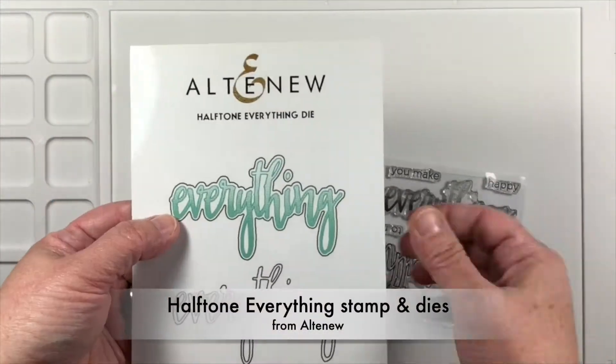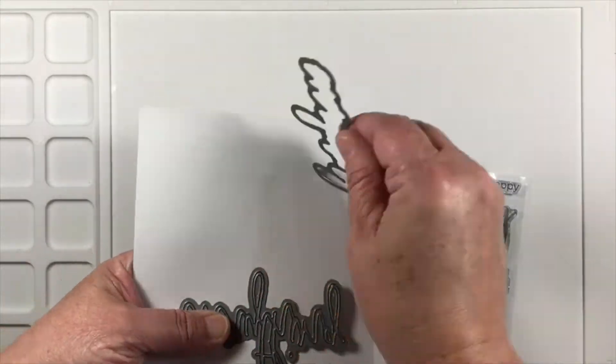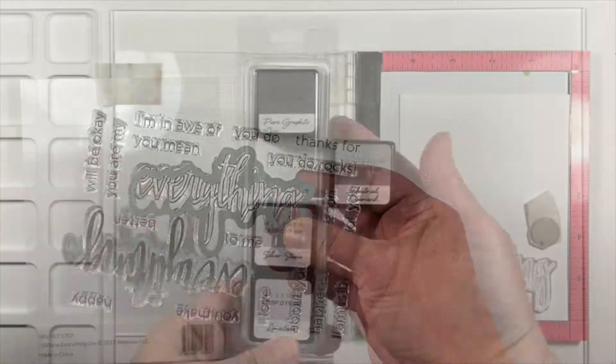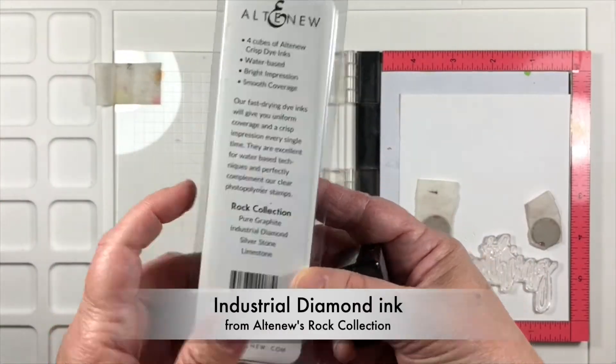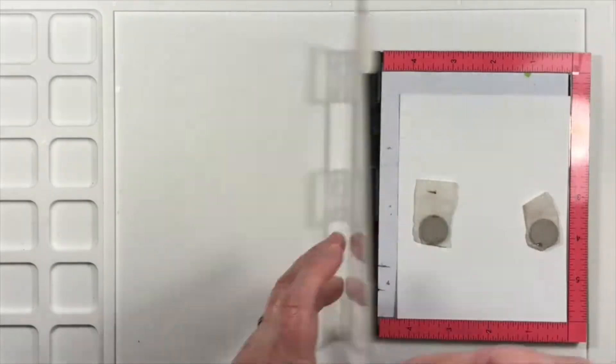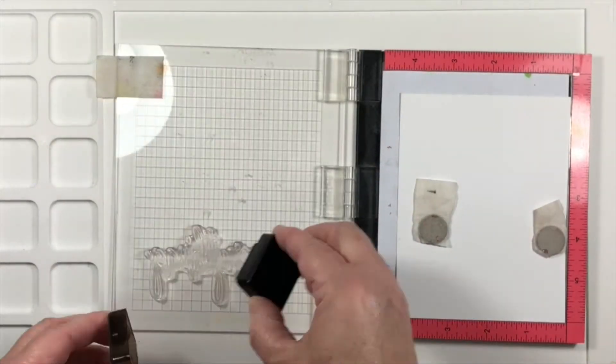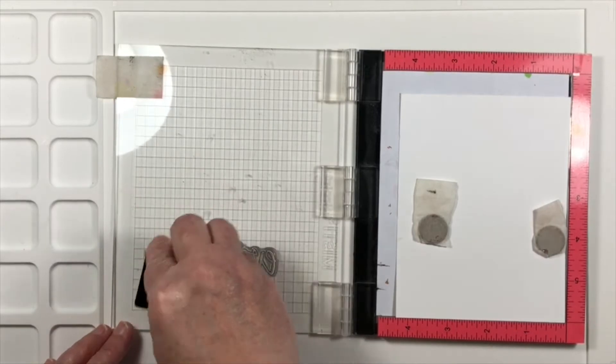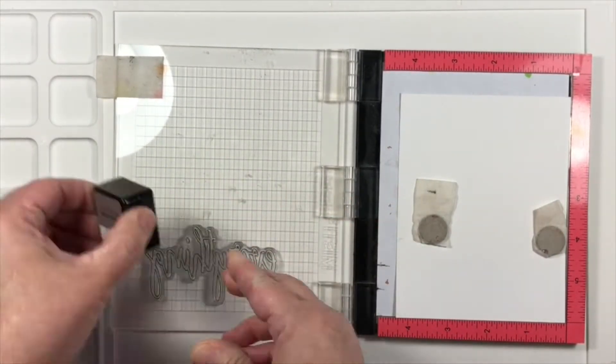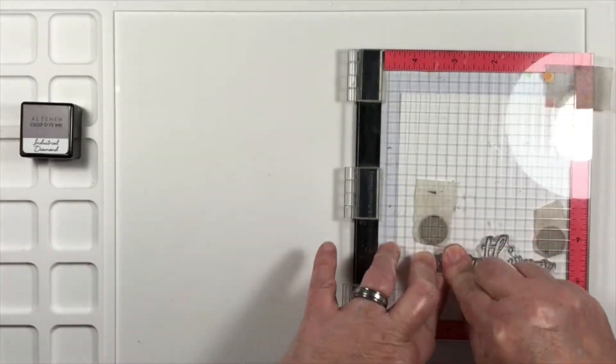I'm stamping today with Altenew's Half Tone Everything stamps and dies. When I think of a layered stamp set I don't always think about word stamps. However this is definitely a layering stamp set. So the way I'm going to approach it is to first stamp the outline image of the word everything and I'm using Altenew inks here today. This is Industrial Diamond.